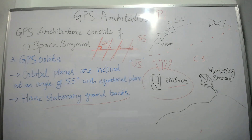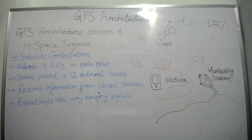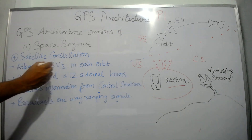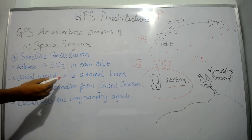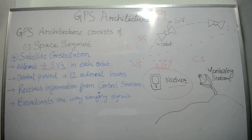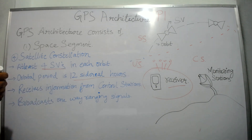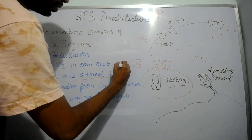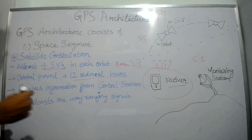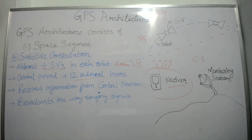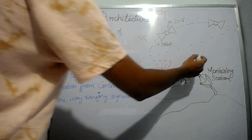Now let's talk about satellite constellation. There are at least four satellite vehicles or space vehicles in each orbit. The orbital period is 12 sidereal hours. 12 sidereal hours is different from a solar day — it is four minutes fast than the solar day.